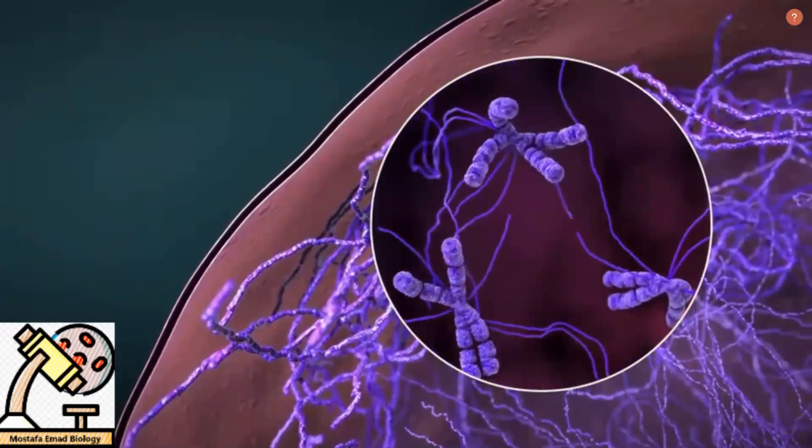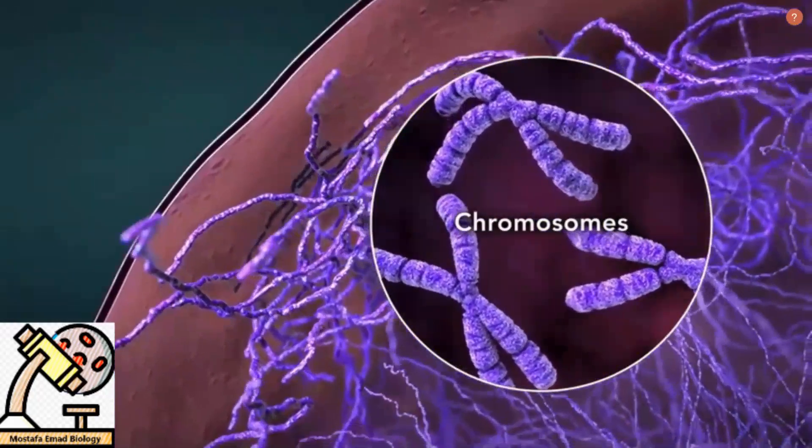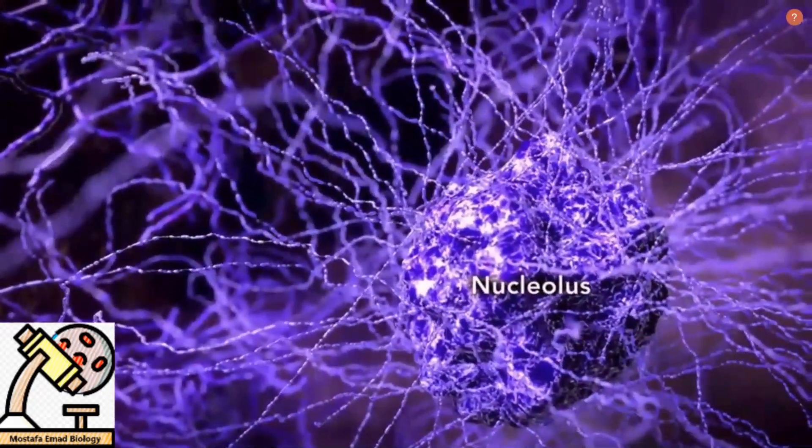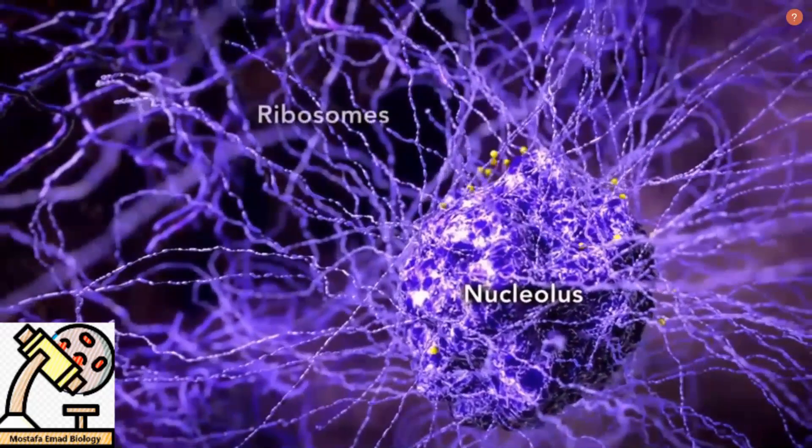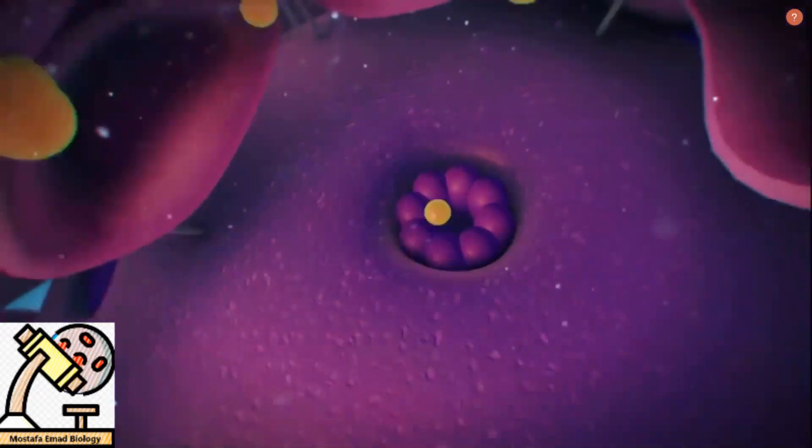Chromatin is the tangled spread out form of DNA found inside the nuclear membrane. When a cell is ready to divide, DNA condenses into structures known as chromosomes. The nucleus also contains a nucleolus, which is a structure where ribosomes are made. After ribosomes leave the nucleus, they will have the important job of synthesizing or making proteins.